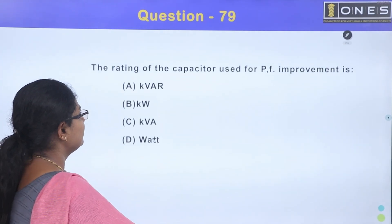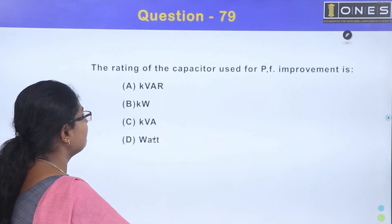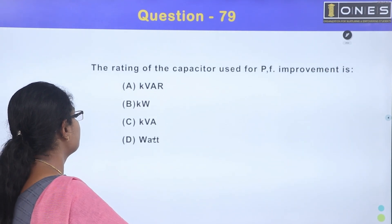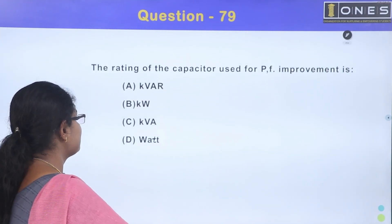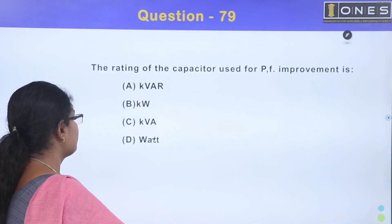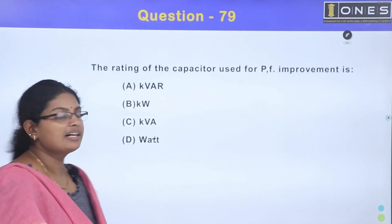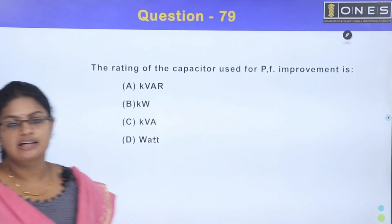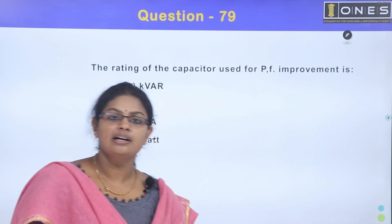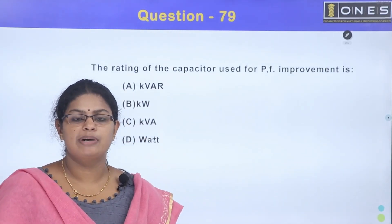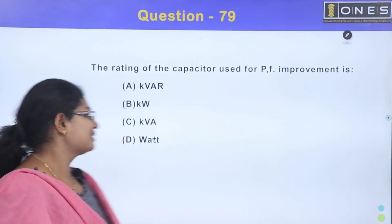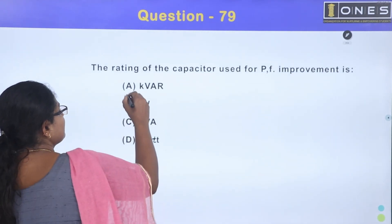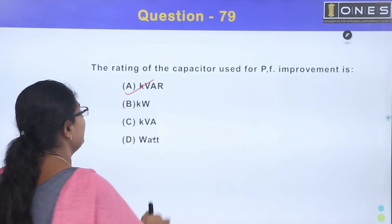The rating of the capacitor used for power factor improvement is: Option A, kVAR; Option B, kilowatt; Option C, kVA; Option D, watt. A capacitor improves the leading power factor, and its rating is Option A, kVAR.